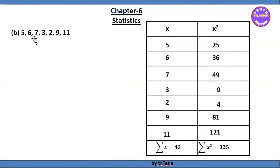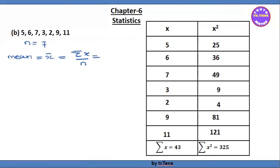Now for the sample data. In the sample data, we are finding the mean. Here n equals 7. The mean formula is x-bar equals sigma x divided by n. The x values are 5, 6, 7, 3, 2, 9, 11.